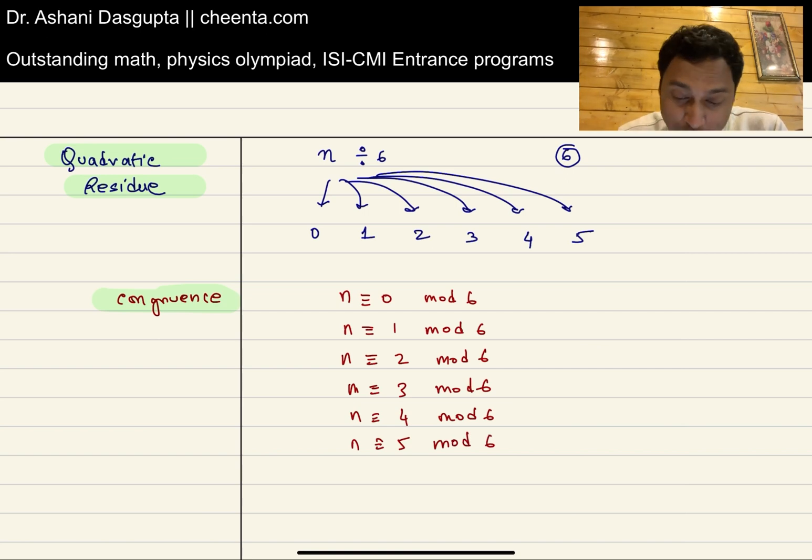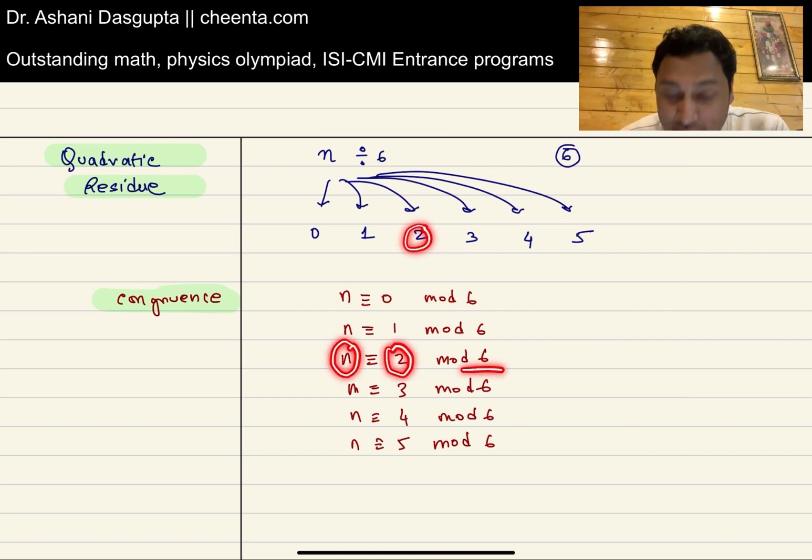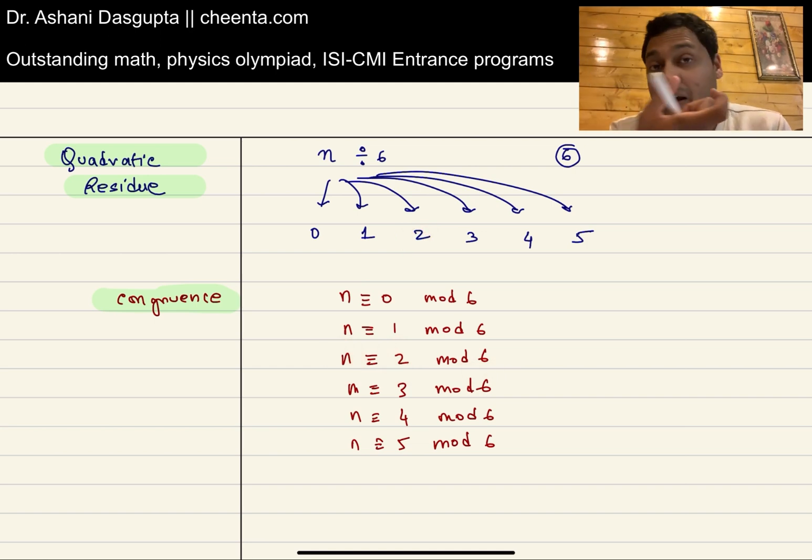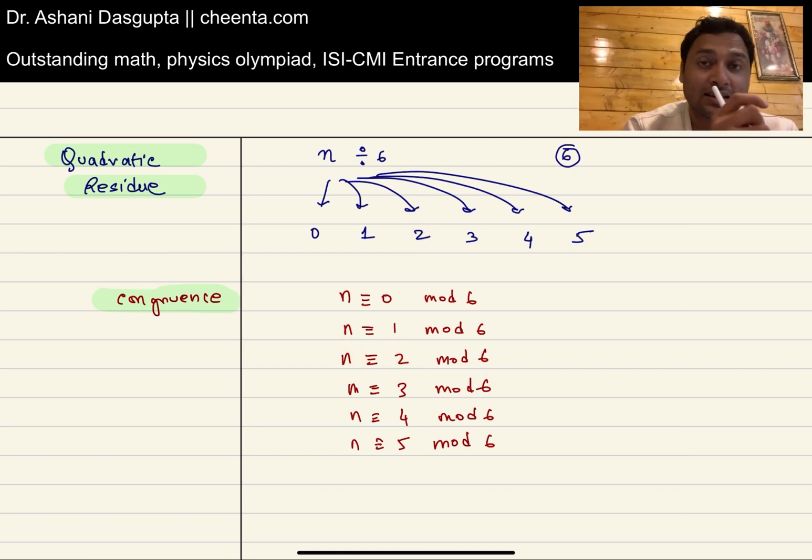If you don't remember what this means, a number is congruent to something modulo 6 means that the difference of these two numbers is divisible by 6. If the remainder is 2, that means the difference of n and 2 is divisible by 6. If you throw away the remainder from the number, whatever remains is exactly divisible by 6. So n gives remainder 2 when divided by 6 is the same thing as saying n is congruent to 2 modulo 6.